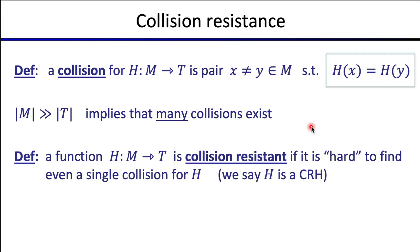It's hard to find even a single pair X, Y that happens to collide for the hash function H. If the hash function H has this property, we say that H is collision resistant and we'll write that H is a CRH. CRH just stands for collision resistant hash.